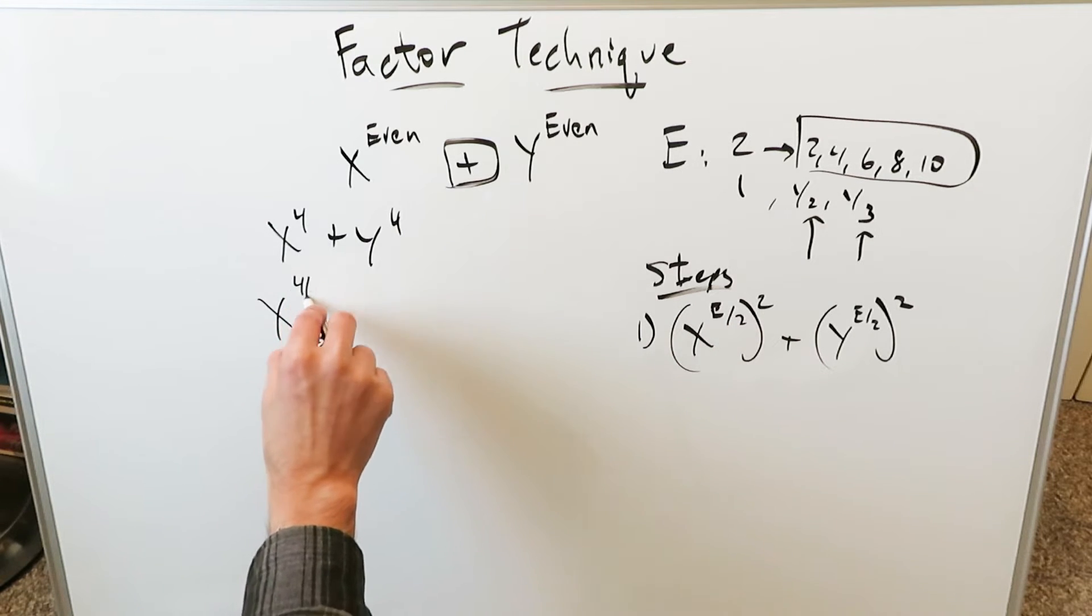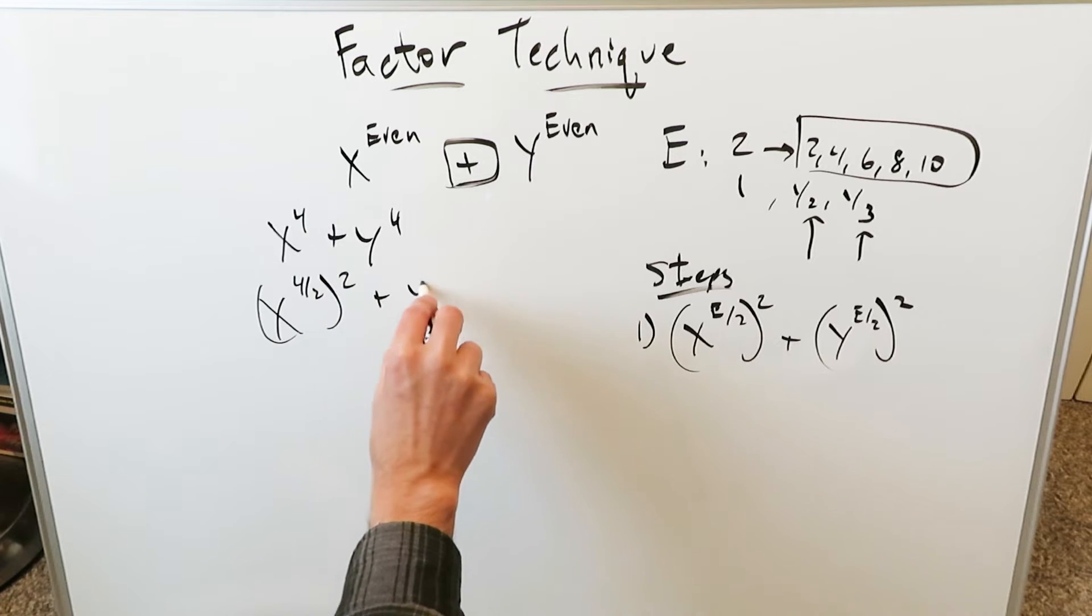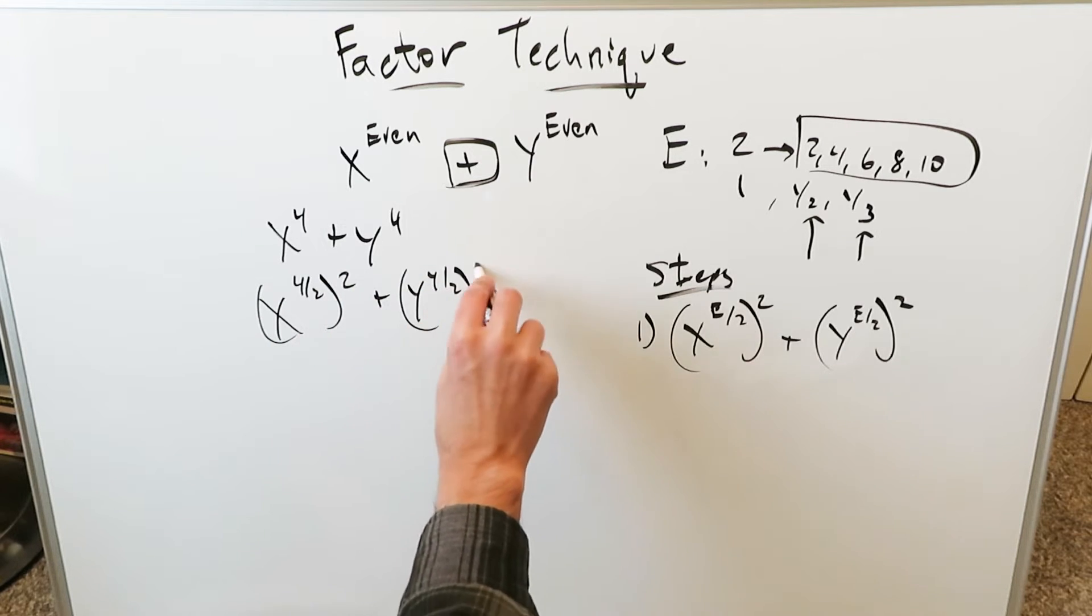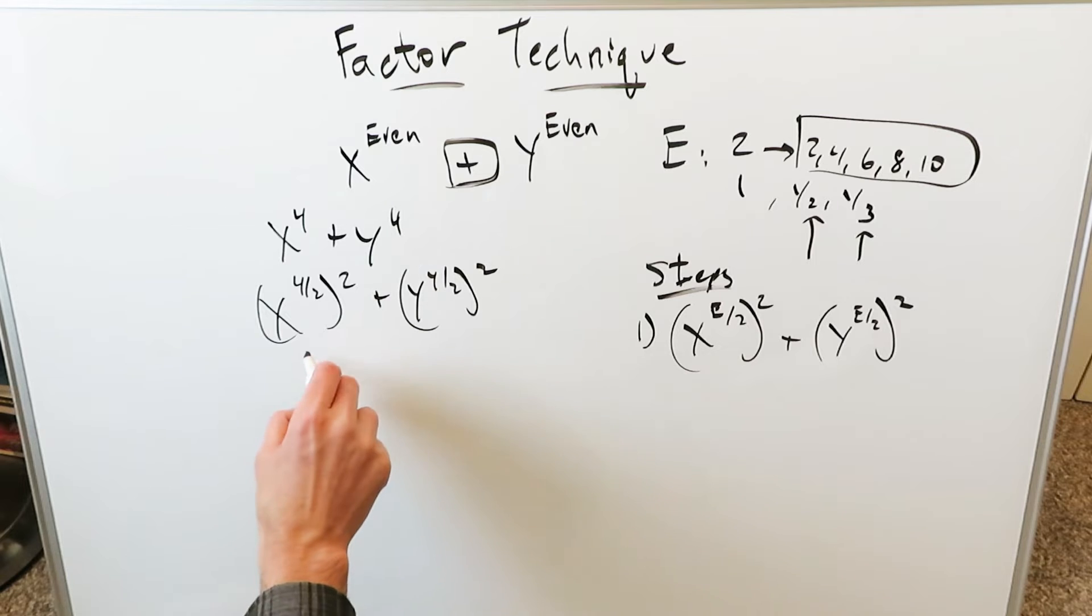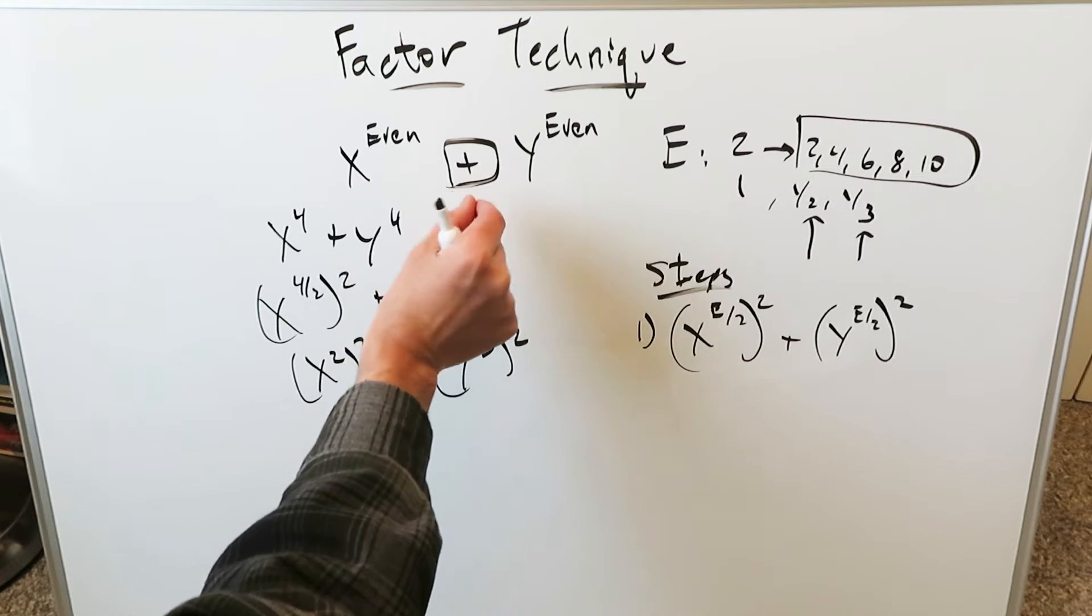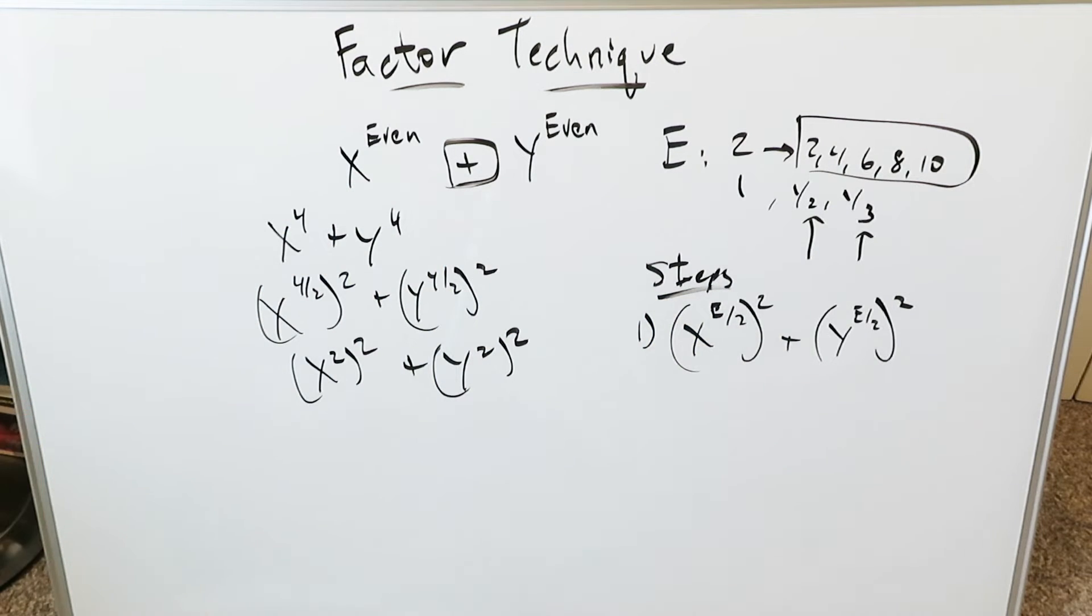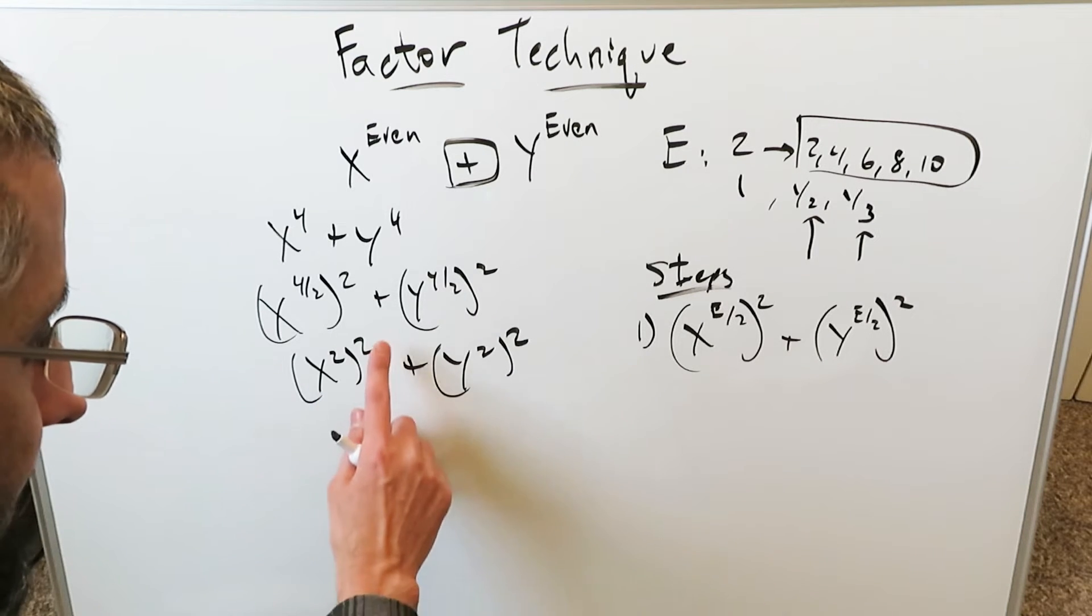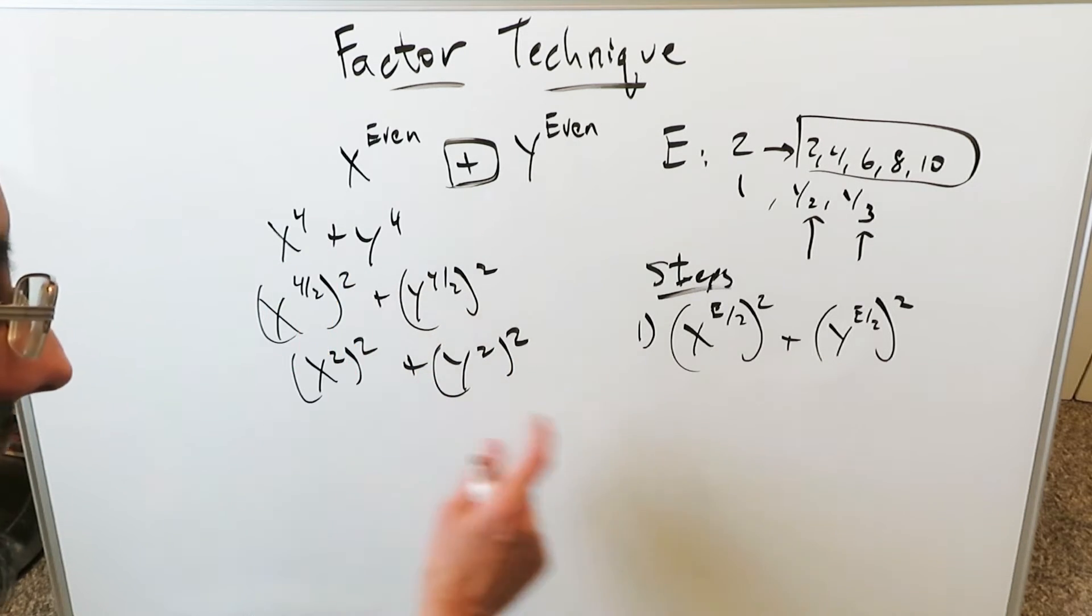x here, 4 over 2 to the power of 2 plus y, 4 over 2 to the power of 2. Then this transforms here as this, x squared, squared plus y squared, squared. The reason why you do these certain number of steps is because this right here, template will transform into a different type of template. Hence, these steps are necessary. I have x squared, squared, y squared, squared, which is equal to that.